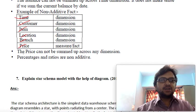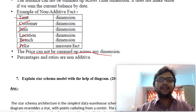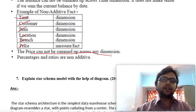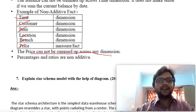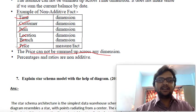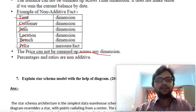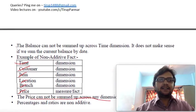For non-additive: consider dimensions of time, customer, item, location, branch, and price. The price cannot be summed up across any dimension. For a standard product, price is based on MRP — I cannot sell a product cheaper in one location and more expensive in another. So these dimensions are non-additive. To summarize: additive means we can add across all dimensions, semi-additive means only some, and non-additive means none.